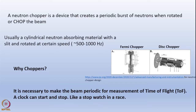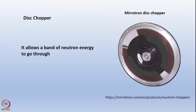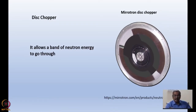To measure time of flight, we can't have a continuous source without making it periodic using choppers. This disc chopper - I have taken it from the site of Mirotron, a commercial company - is basically a disc that uses a band of neutron energy to go through. You can see the photograph here.